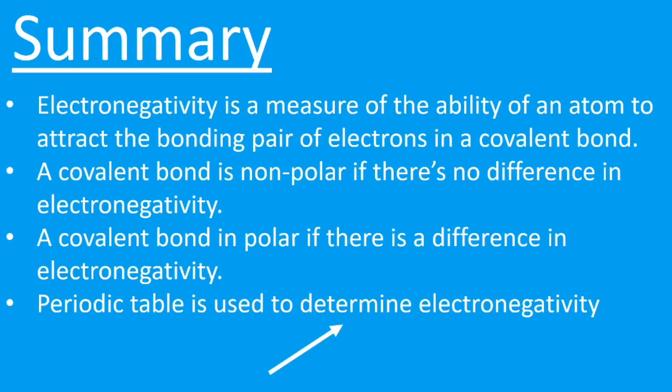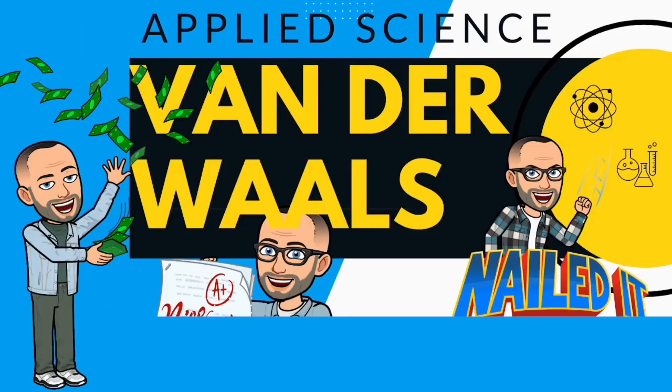And we can use the periodic table to determine electronegativity because it increases from left to right and bottom to top, so from bottom left to top right. And that's it for this video, and please look out for the next one where we're going to look at Van der Waals intermolecular forces.